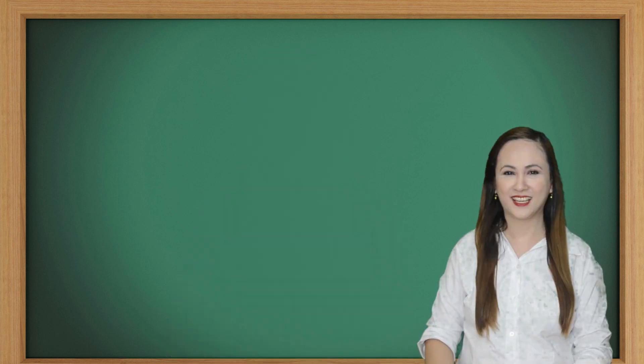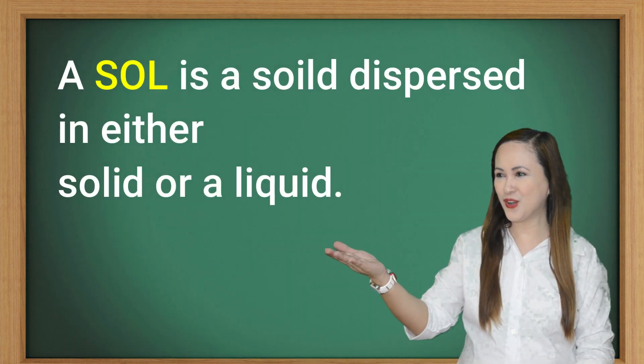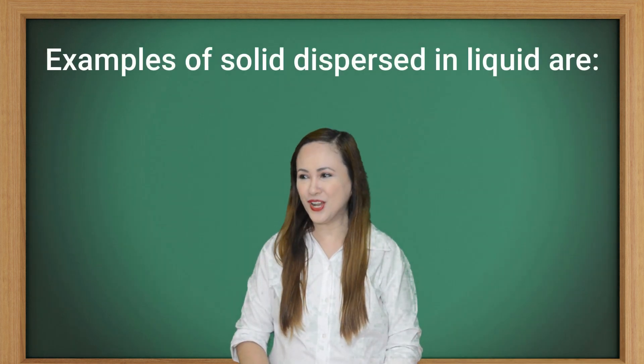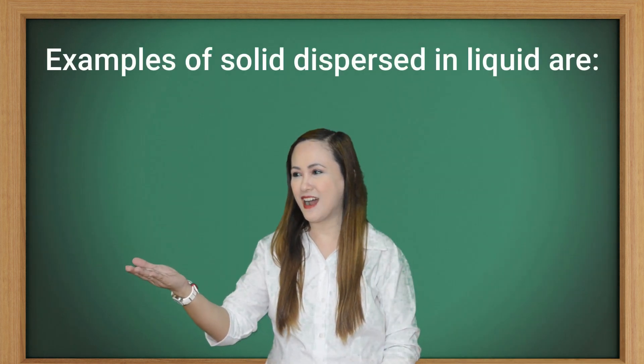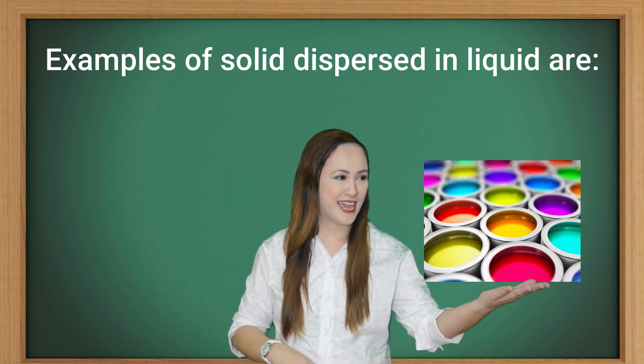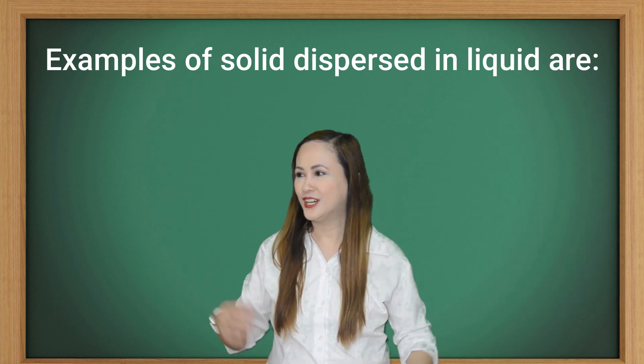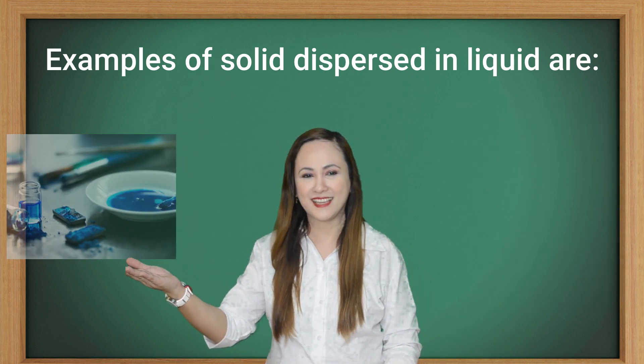Now, let's talk about the types of colloids. A sol is a solid dispersed in either solid or liquid. Examples of solid dispersed in liquid are blood, paint, gum, muddy water, and some forms of pigment ink.